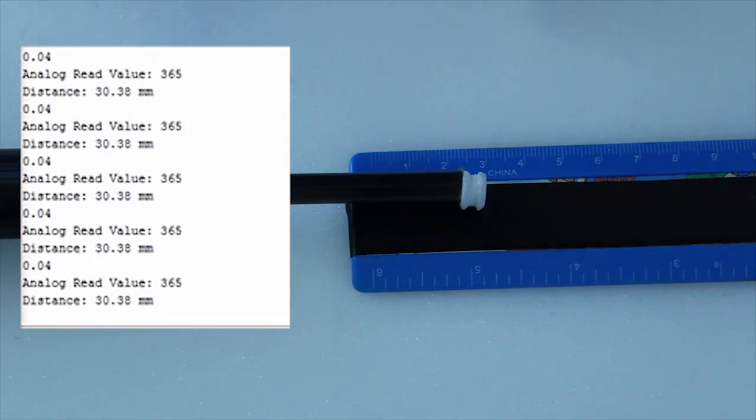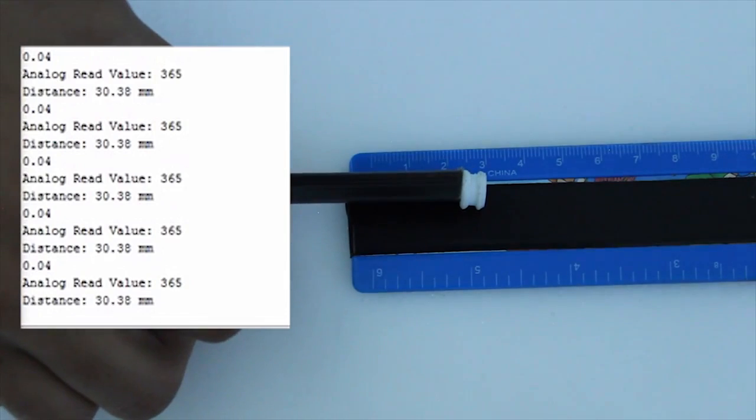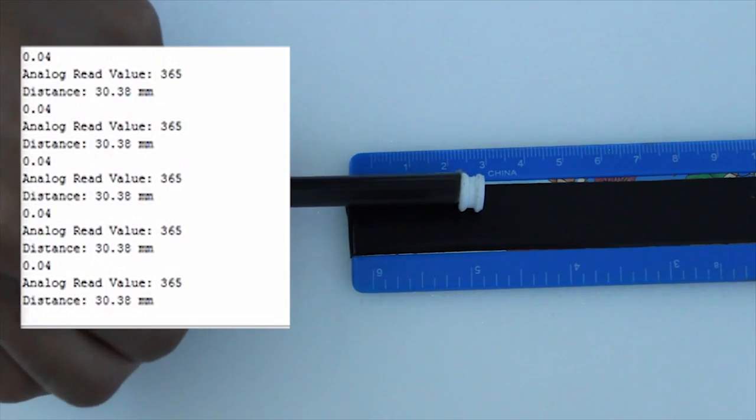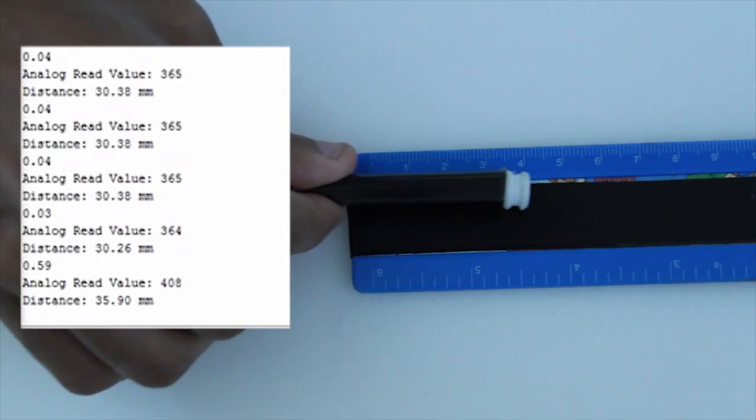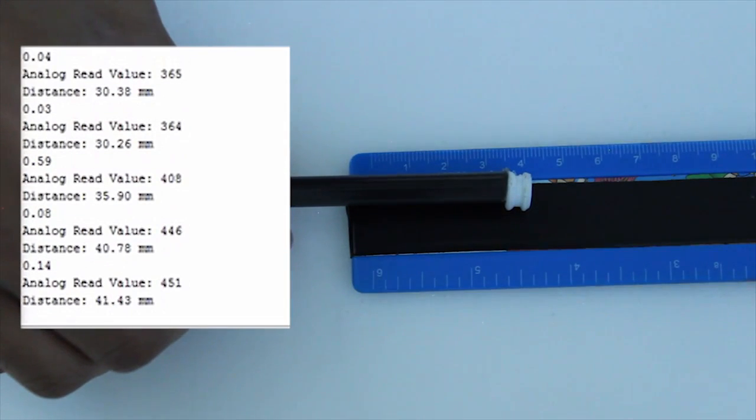So here we're going to show a side-by-side comparison of the real world versus the calculated version on the monitor. We're going to start off at 30 millimeters and slowly make our way up. As you can see when we move the plunger the displayed value increases proportionally.